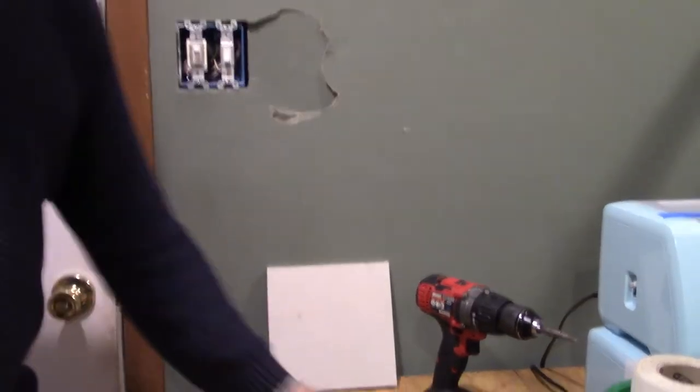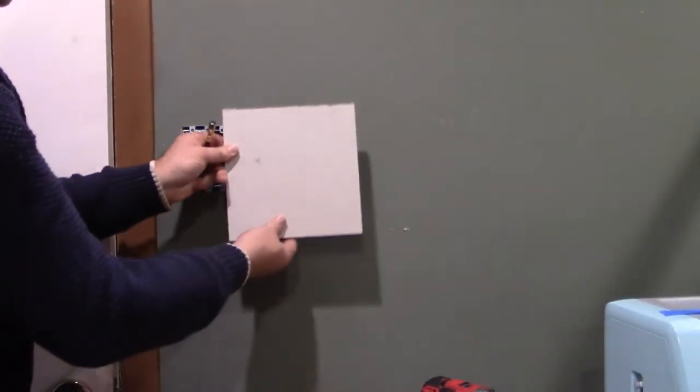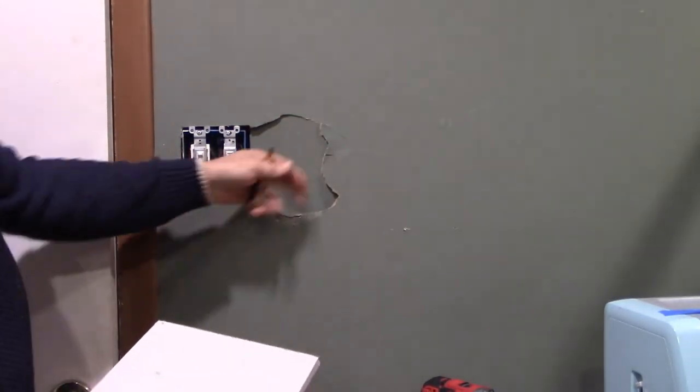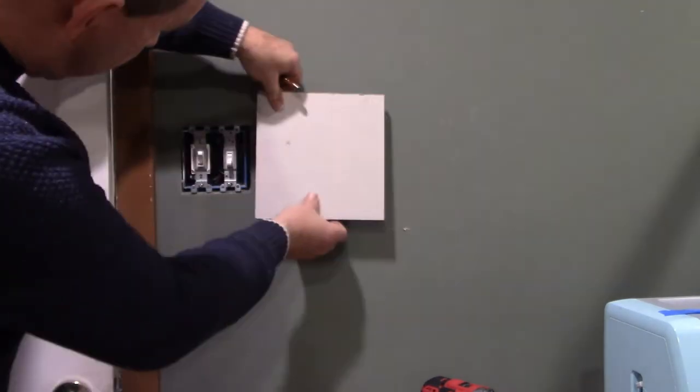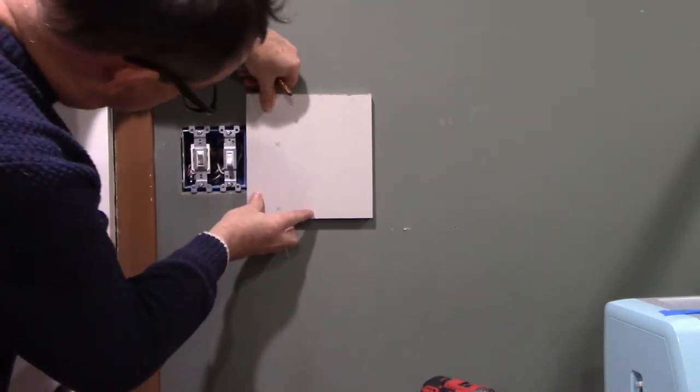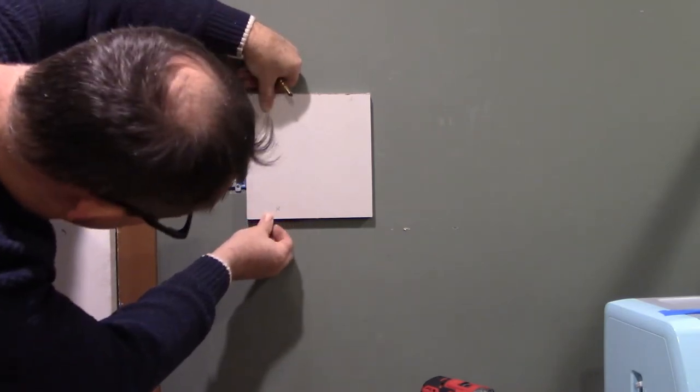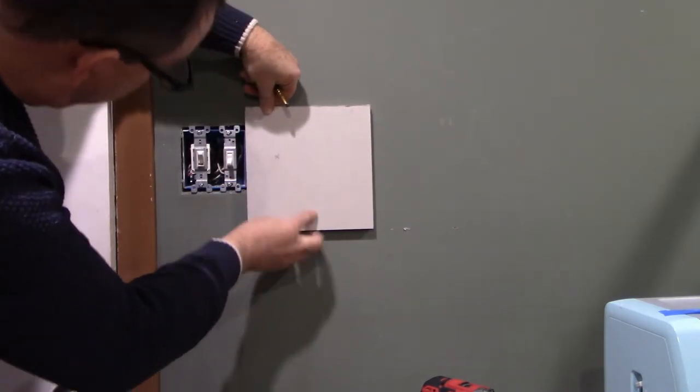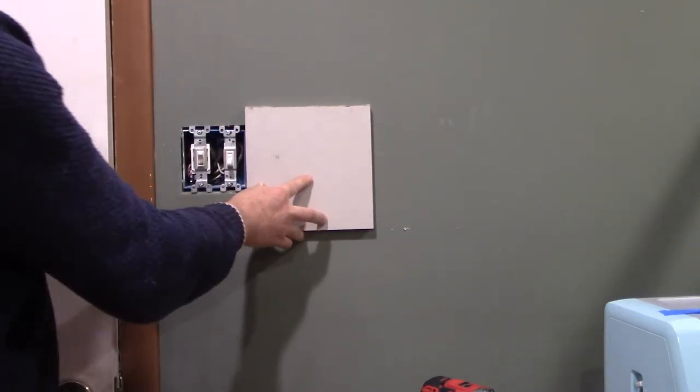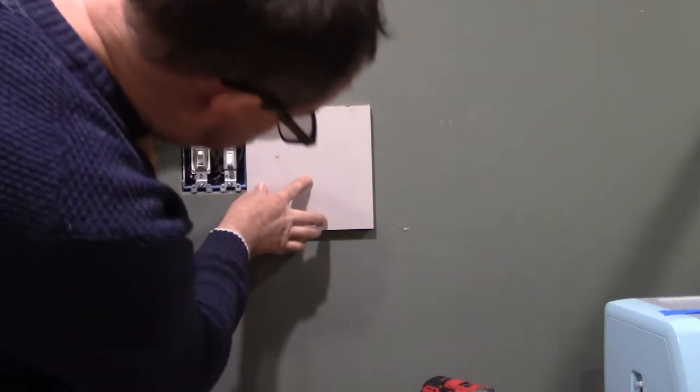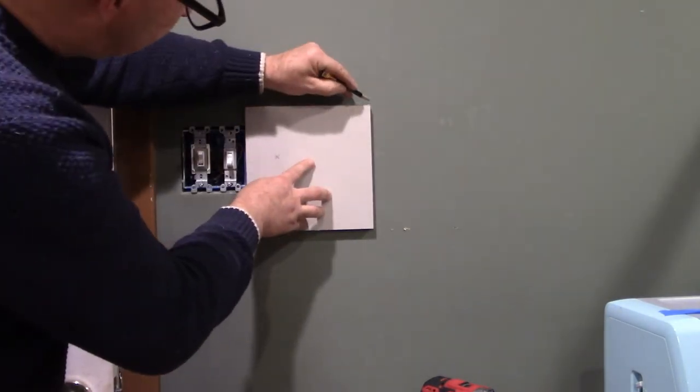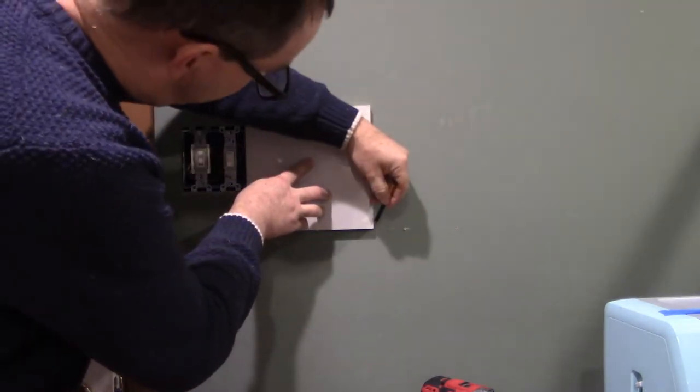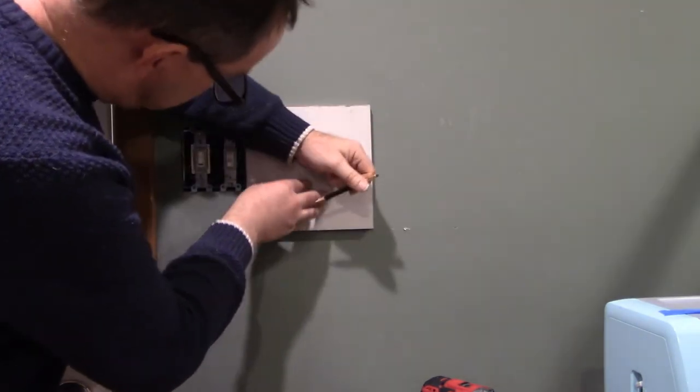All right so like I told you, you got to make it worse before it gets better. So we've got to cut this hole out to a shape that's a size it's easy to patch. This is impossible to patch. And so I'm just gonna put this up here against the light switch like that. I'm gonna put my patch up there and with the pencil I'm gonna trace around it. Then I'll know where to cut out because I want to cut out the hole the exact same size as my patch.